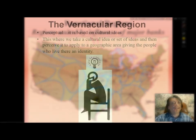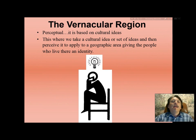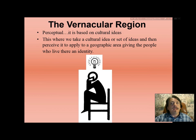The vernacular region is perceptual — it's based upon cultural ideas. This is where we take a cultural idea or set of ideas and perceive them to apply to a geographic area. The north-central state of New Mexico is known for its restaurant cuisine using chile — and yes, it's spelled chile with an E here.